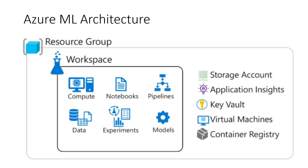The fourth component is data. Since data is spread across different storage systems, we have data in different data lakes or data warehouses, in Cosmos DB, in relational databases, in NoSQL databases, and in file formats.